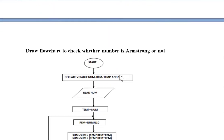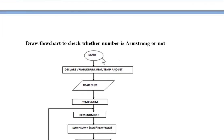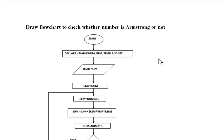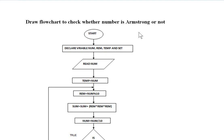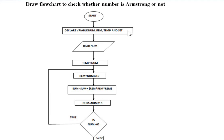The next part is: draw a flowchart to check whether a number is Armstrong or not. An Armstrong number is a number equal to the sum of cubes of its individual digits — for a three-digit number, if you cube each digit and sum them, the result should equal the original number. For the flowchart, we start by declaring variables: num for the number, remainder to store the remainder, temp to store the original number, and set sum equal to 0.